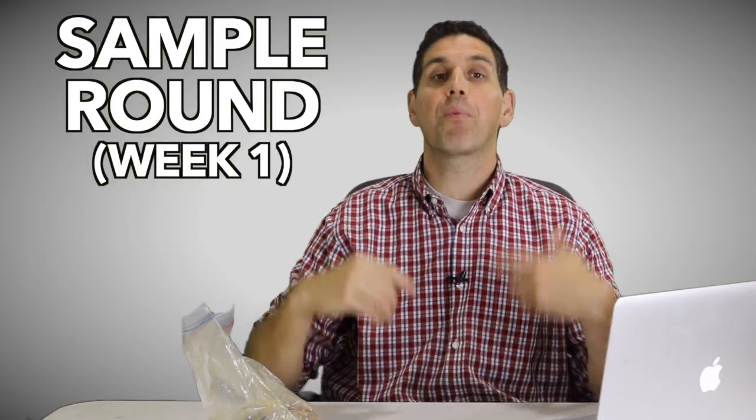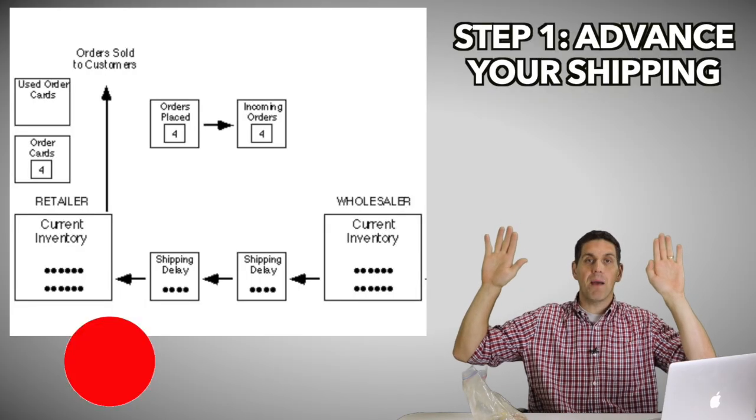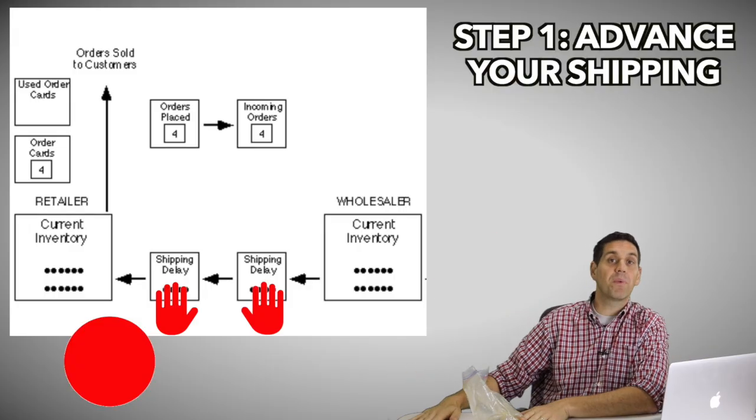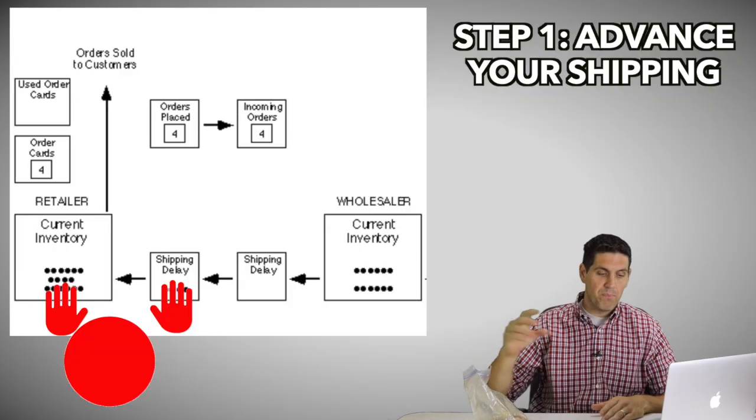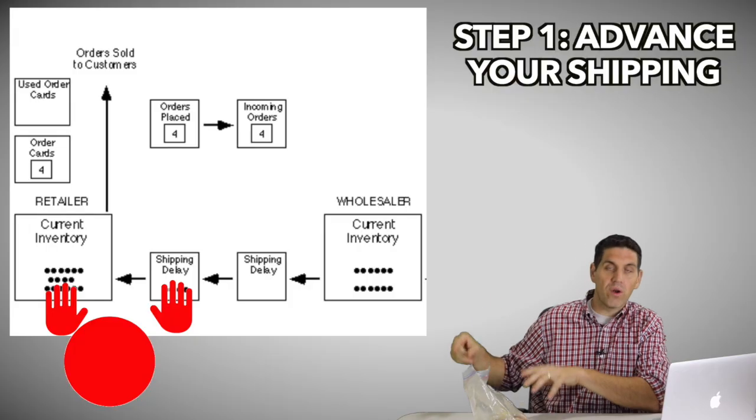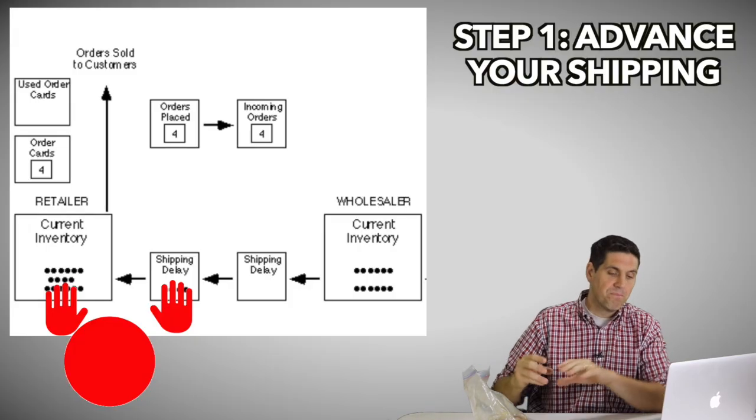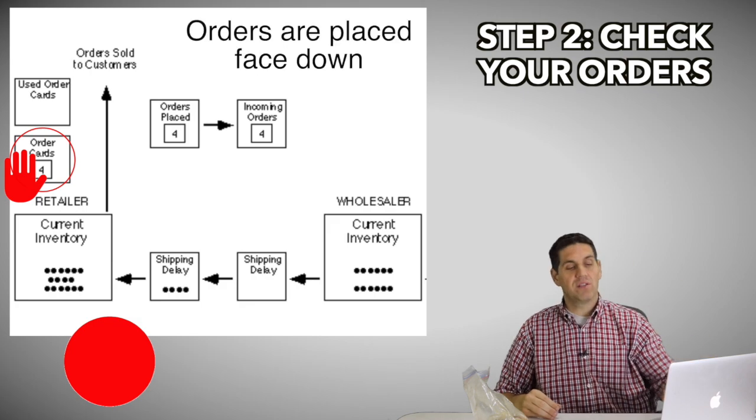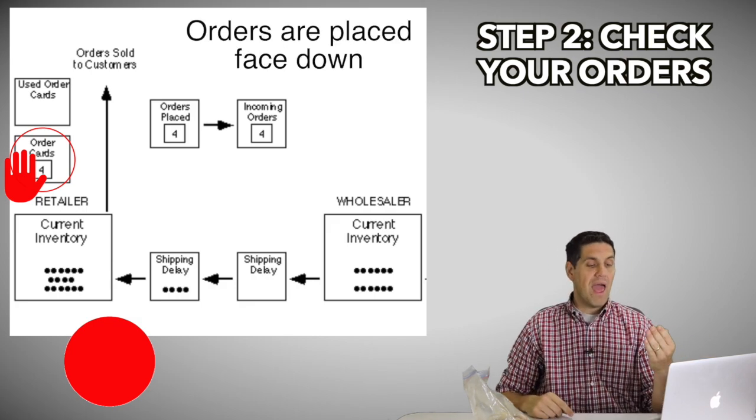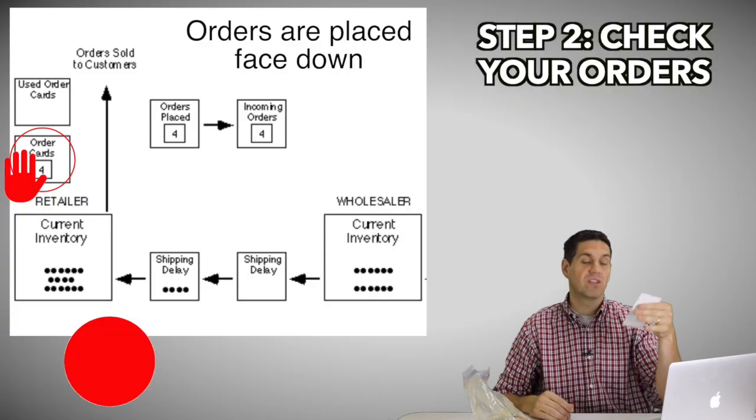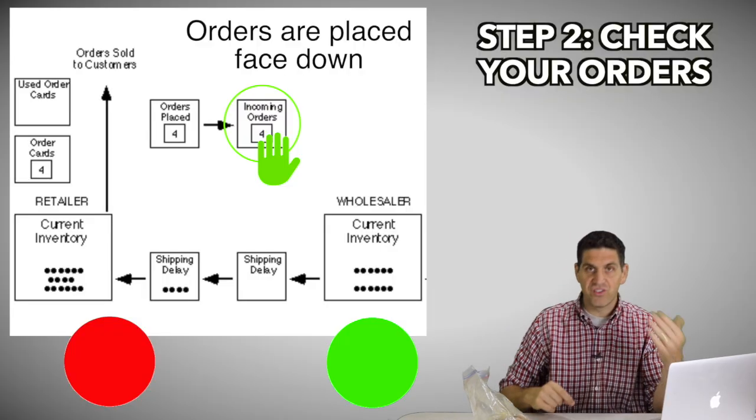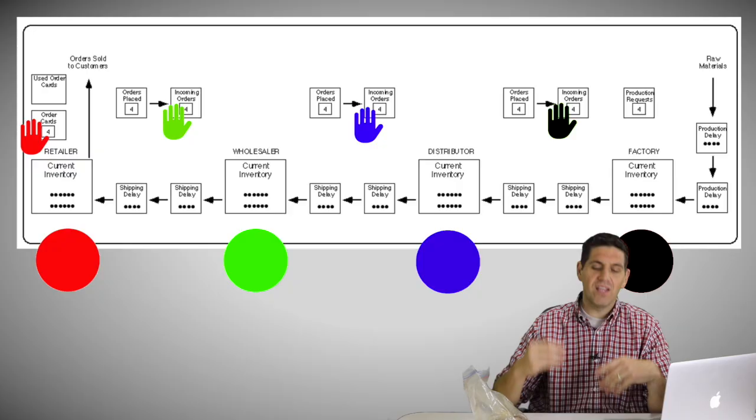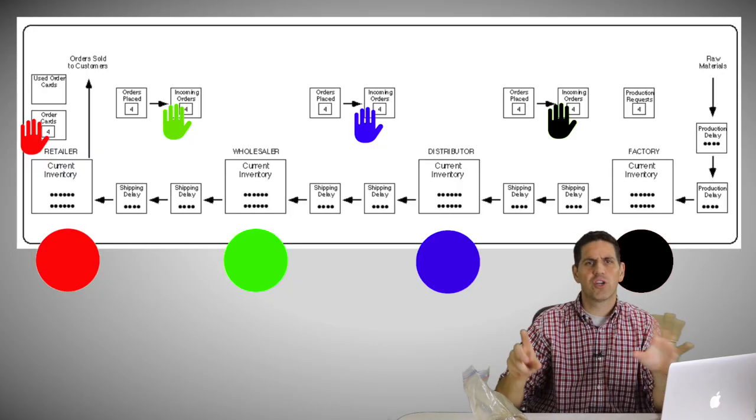So we've got the retailer giving things to the consumers. The wholesaler is filling orders for the retailer. The distributor is making orders and filling orders for the wholesaler and the factory is providing things for the distributor. That's the idea of the production chain or the production process. Here's what we're going to be doing. We'll do a practice round. First things first, everyone put your hands up. So if you're on this side of the table, put your hands up, put your hands to the right, right on the shipping delays, advance your orders. So the first thing they do is they advance their orders over. And so they put the orders were coming in into inventory and then they check their orders.